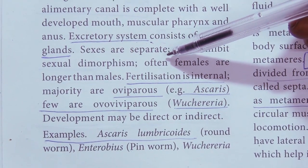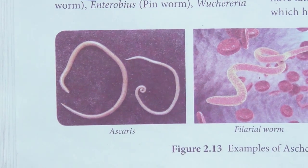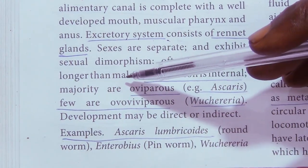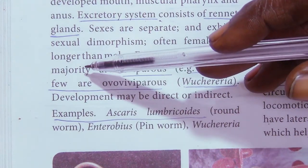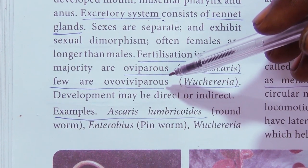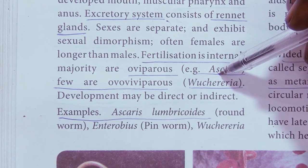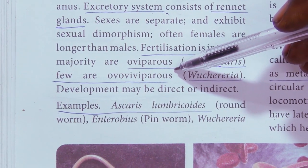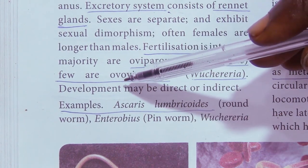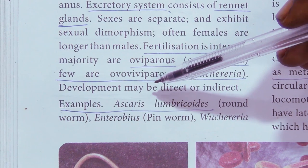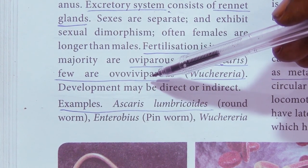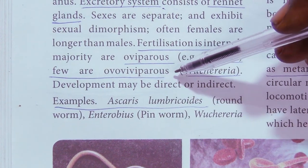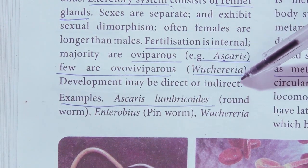Sexes are separate — male and female animals are different. They exhibit sexual dimorphism; females are often longer than males. Fertilization is internal. The majority are oviparous — egg laying — like Ascaris. A few are ovoviviparous. Oviparous means egg laying, viviparous means giving birth to young ones, and ovoviviparous is a combination — the new one develops inside the egg and is then born. Wuchereria bancrofti is an example of ovoviviparity. Development may be direct or indirect.